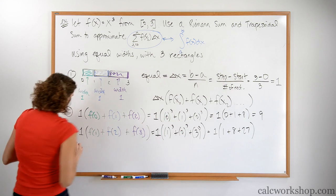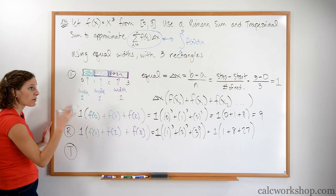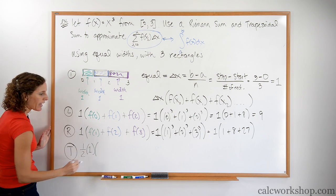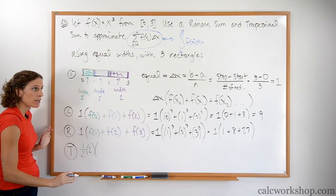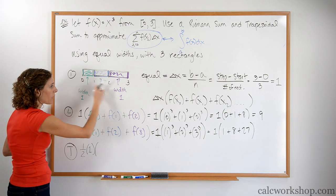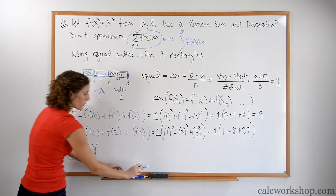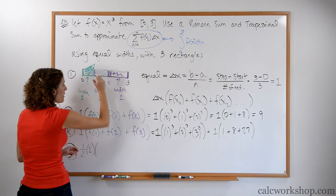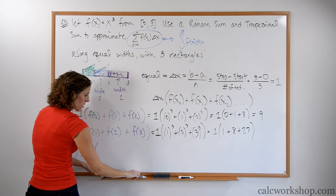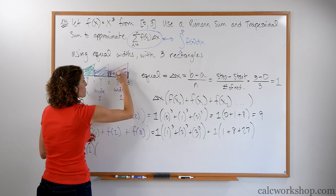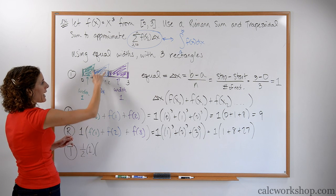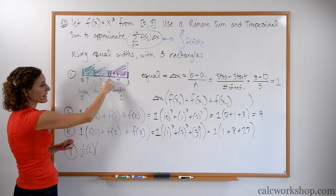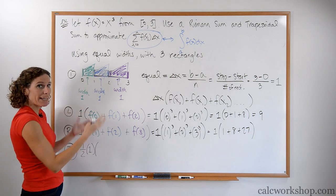Now let's look at the trapezoidal approximation. If we have equal widths, they're all going to have a one-half factor with the same width. Every single height value has to be accounted for. The middle heights appear twice — the height at x = 1 is shared by the green and blue trapezoids, and the height at x = 2 is shared by the blue and purple.